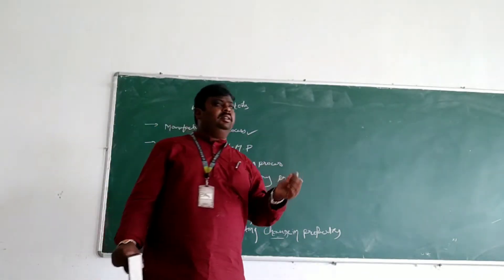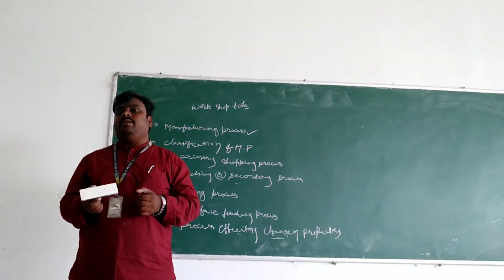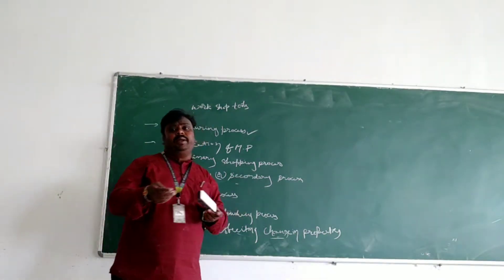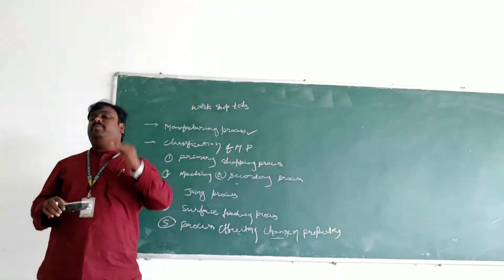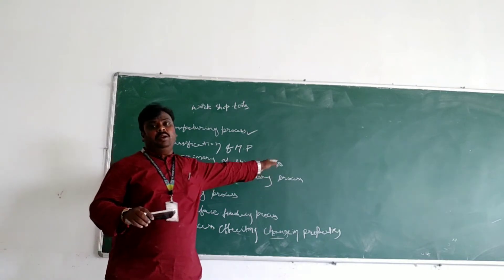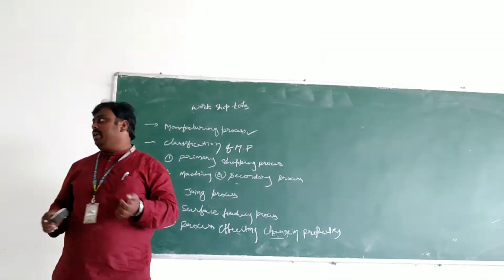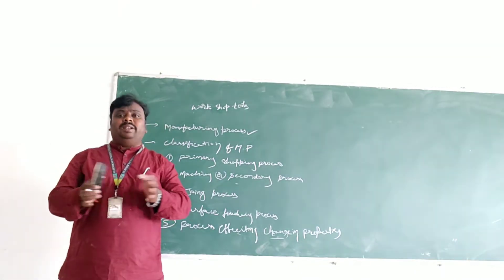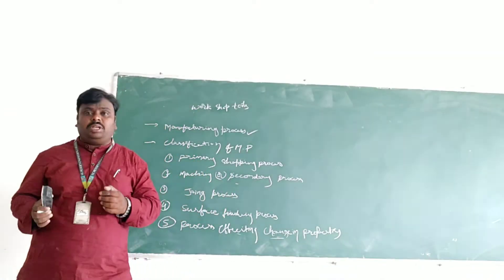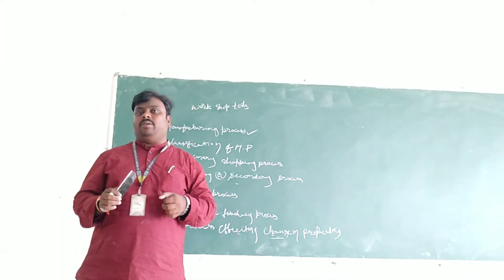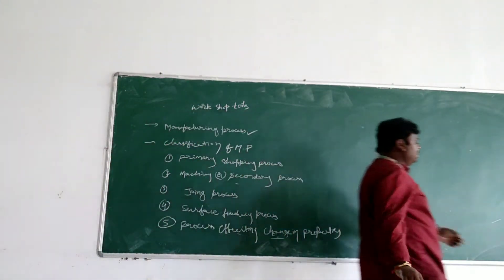Any material we can take - that particular shape will be there. That shape will be converted into primary shaping operations. Taking a simple example, we can take the wood. Now we are going to notice the cylindrical type of position. We are going to prepare the steering of the material - preparing the sphere shape of the duster. Just you can know the duster.